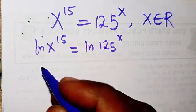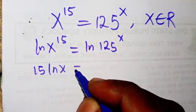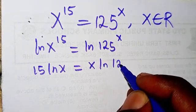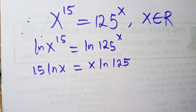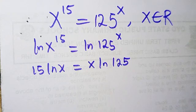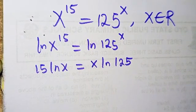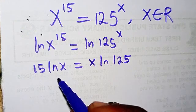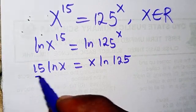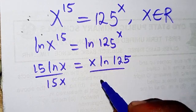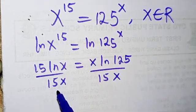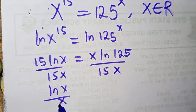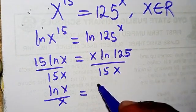According to the law of logarithm, this 15 will come down: we have 15·ln(x) equals x·ln(125). Now I can separate the two by having variables on one side and numbers on the other. I'm going to divide through by 15x, so the 15 cancels and the x cancels, giving us ln(x)/x on the left.